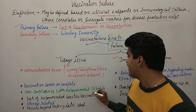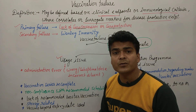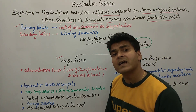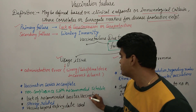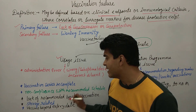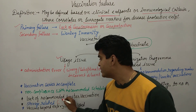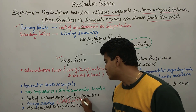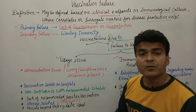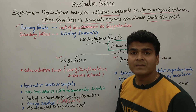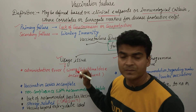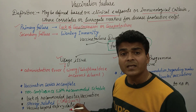Then the vaccination series is incomplete. Then non-compliance with the recommended schedule — the patient or children who are to be vaccinated do not comply with the recommended schedule. Then lack of recommended booster vaccination — the booster doses recommended were not taken by the patient. And storage-related — the cold chain was not maintained as required. Whatever vaccine was stored, it gets damaged. Then vaccine beyond expiry date used — if the vaccine used has already passed its expiry date, there will be vaccination failure.